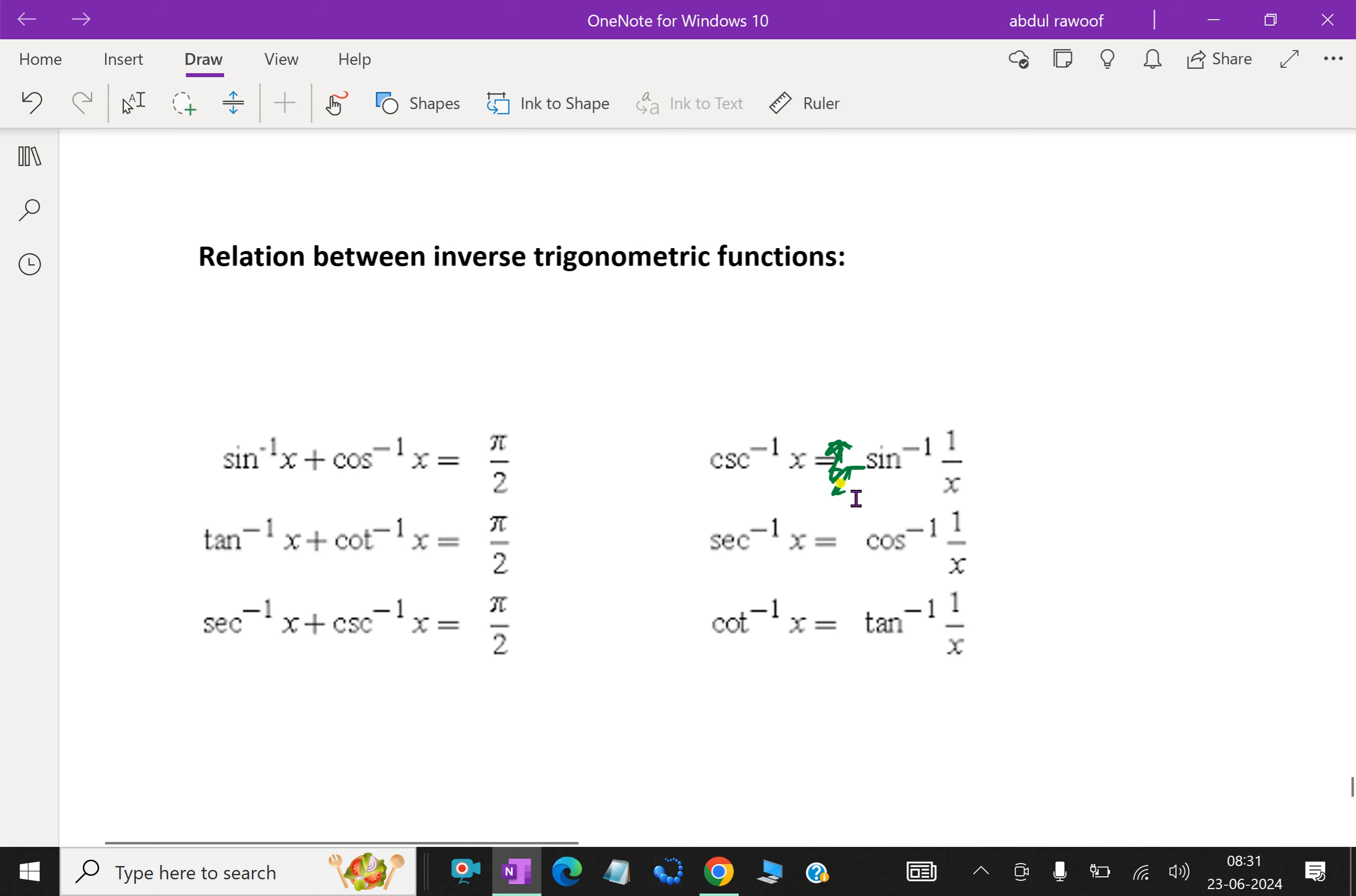Cosecant inverse x equals sin inverse 1 over x. Secant inverse x is cos inverse 1 over x, because both are reciprocals. Cosecant and sin are reciprocal. Therefore, cosecant inverse x is sin inverse of 1 over x. Remember this.